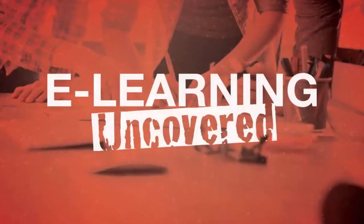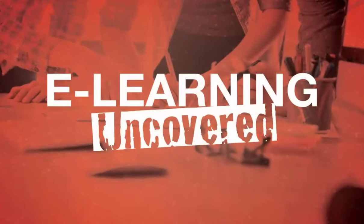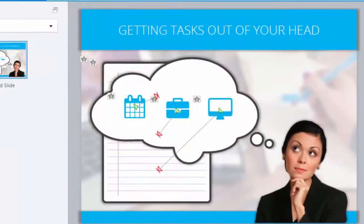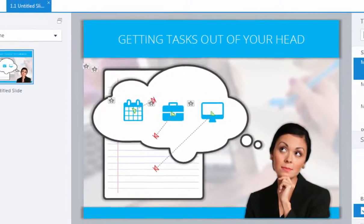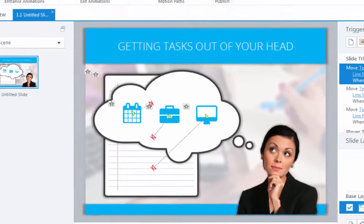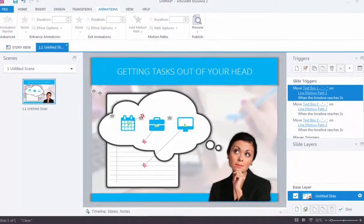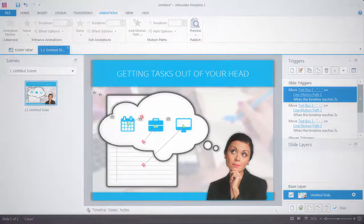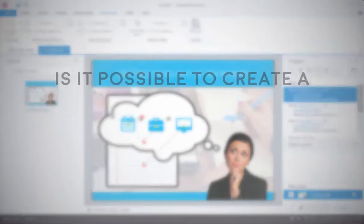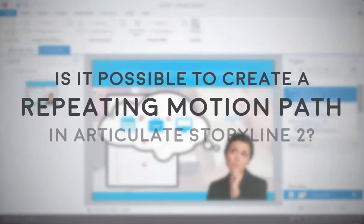Hey there folks, Tim Slade here from elearninguncovered.com. In one of my recent Articulate Storyline workshops, I was showing the class how to move objects across the screen using motion paths. This led to a couple of my students asking if it would be possible to create a repeating motion path in Storyline 2. Not only is it possible, but it's actually an effect that I've used many times in my own elearning projects.